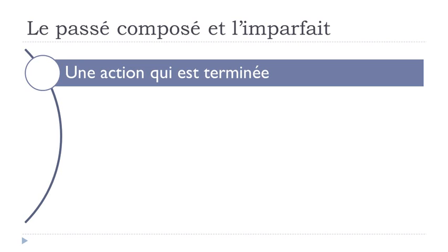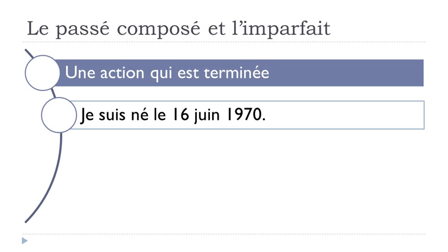Une action qui est terminée — a completed action. For example, if you want to introduce your birth date: je suis né le 16 juin 1970. It was an action in a way, but it's finished. So you use the verb naître at the passé composé: je suis né le 16 juin 1970.